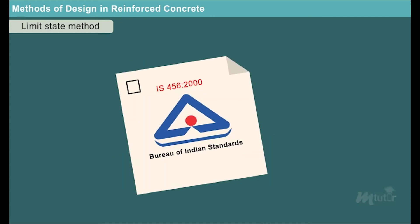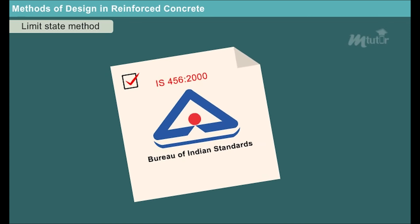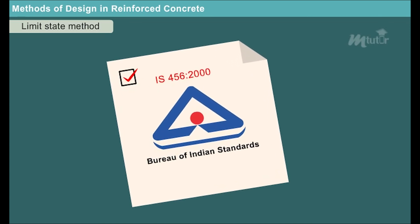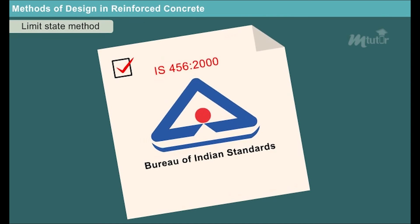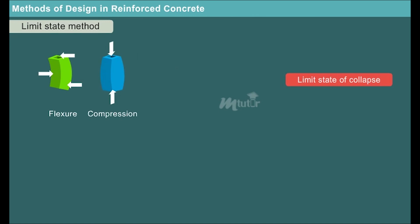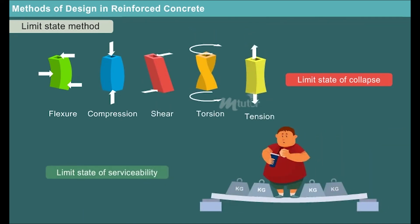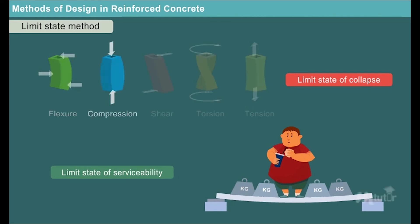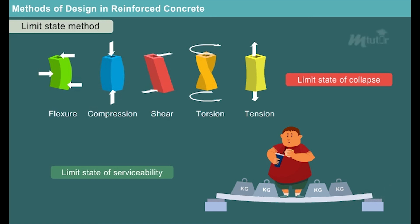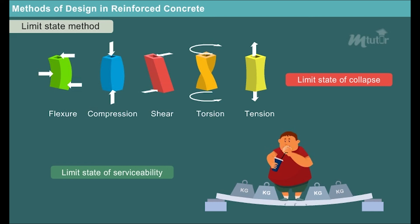Limit state method considers both working and ultimate loads with a view to satisfy the requirements of safety and serviceability. As per IS 456:2000, all limit states shall be considered in design to ensure adequate safety and serviceability. Two categories of limit states are considered: one is the limit state of collapse, which includes flexure, compression, shear, torsion, and tension; the other is the limit state of serviceability, which includes deflection, cracking, vibration, fire resistance, and durability.